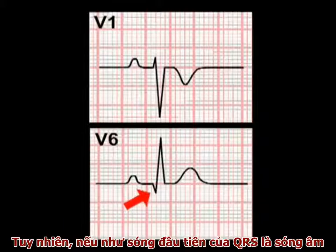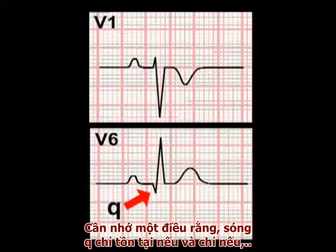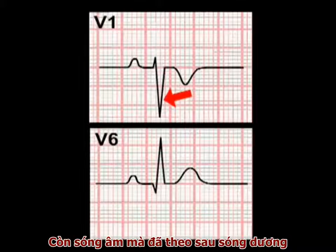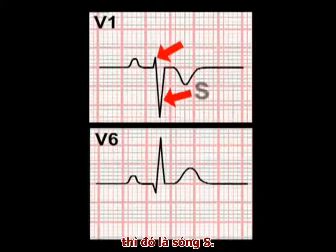However, if the first deflection of the QRS complex is negative, this deflection is termed a Q-wave. This is important. A Q-wave can only exist if, and only if, the first deflection of the QRS complex is negative. A negative deflection following a positive deflection, no matter how small that positive deflection may be, is an S-wave.